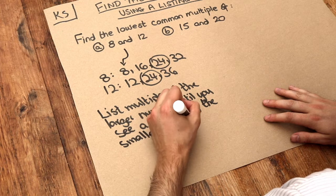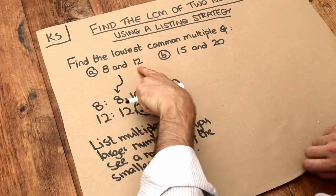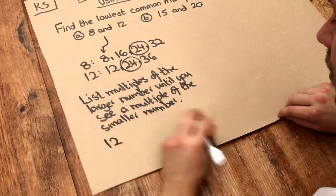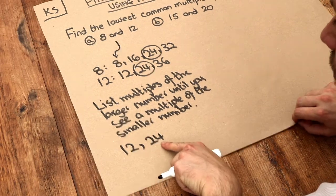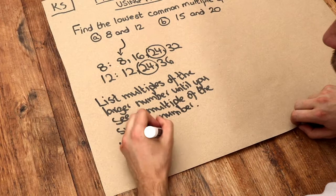So I would just list out multiples of the larger number, 12. So multiples of 12. We've got 12. 2 times 12 is 24. Is that a multiple of 8? Yes it is. So we can immediately stop.